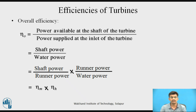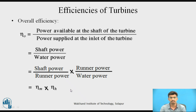The overall efficiency of the turbine is defined as the power available at the shaft of the turbine to the power supplied at the inlet. Shaft power divided by water power gives the overall efficiency. Dividing and multiplying by runner power, this becomes shaft power over runner power, multiplied by runner power over water power. Since shaft power to runner power is mechanical efficiency, and runner power to water power is hydraulic efficiency, overall efficiency equals mechanical efficiency multiplied by hydraulic efficiency.